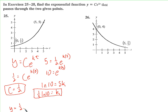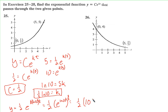So y equals one-half · e^(one-fifth · ln(10) · t). We can rewrite this as one-half times e^(ln(10)) raised to the t/5 power. Since e^(ln(10)) equals 10, this simplifies to one-half times 10^(t/5). Alternatively, compute one-fifth · ln(10) numerically and leave it as an exponential in e.